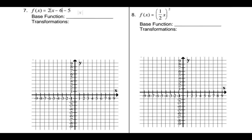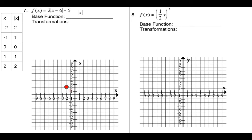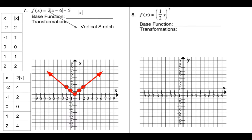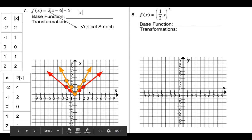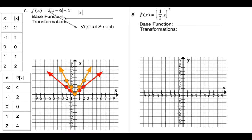Number seven uses the absolute value base function, giving that V shape. The two is a vertical stretch, so we multiply all the y values by two — doubling them all. That's the shape change. Since we're done with stretches and reflections, we now shift right six and down five. Carefully shift every point right six and down five, and it gives us the final graph.